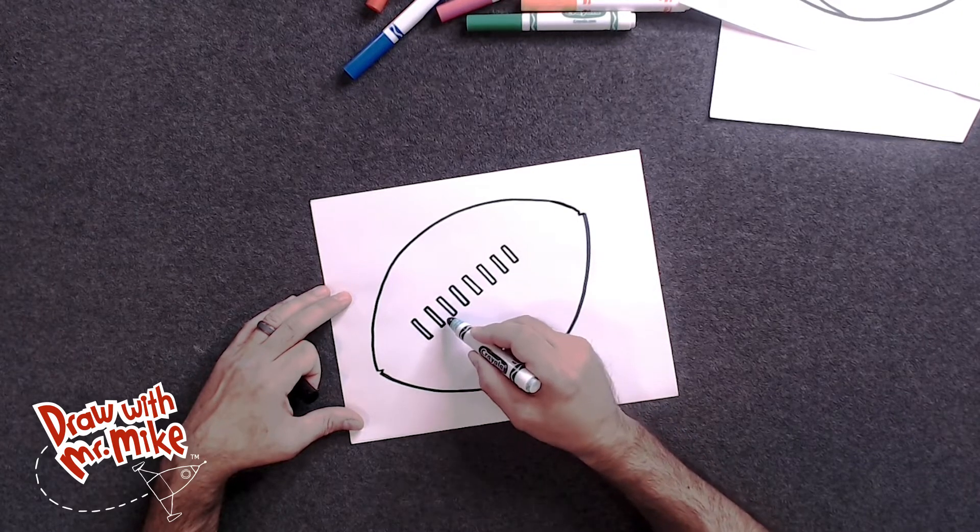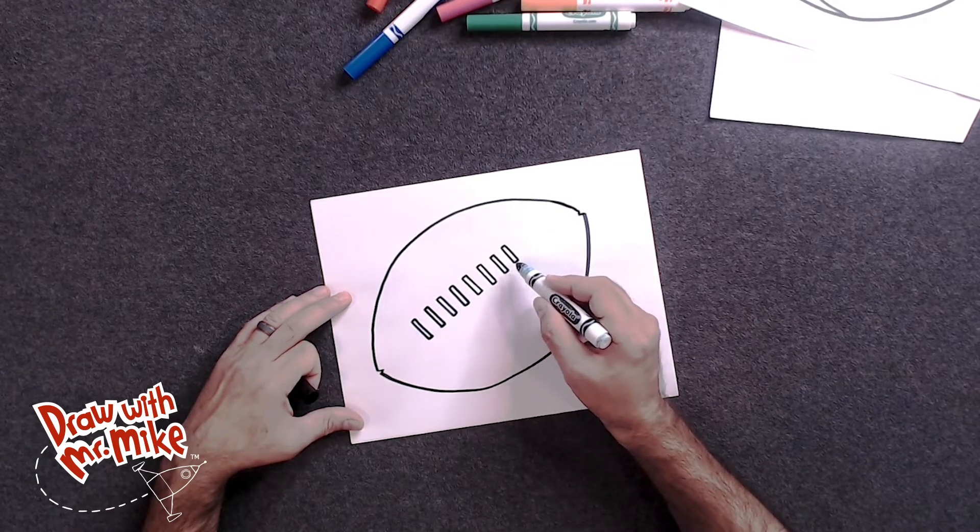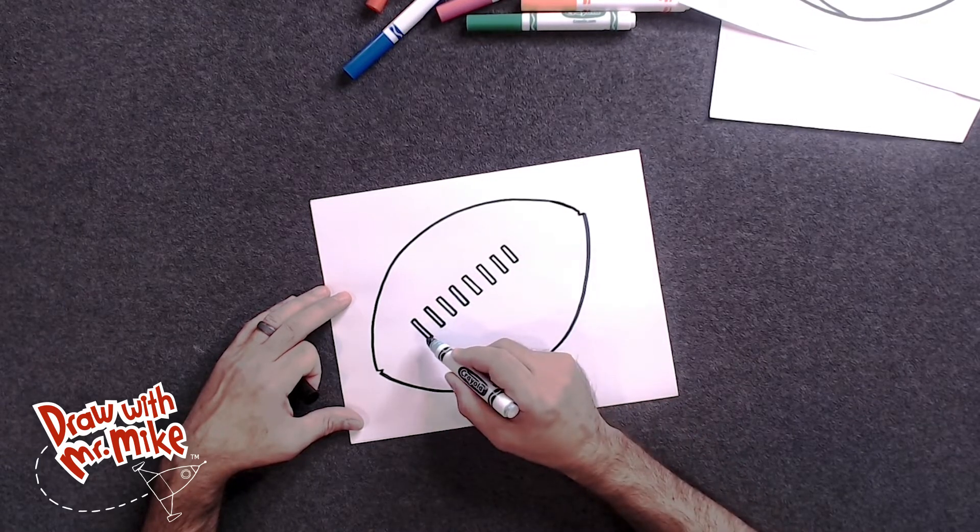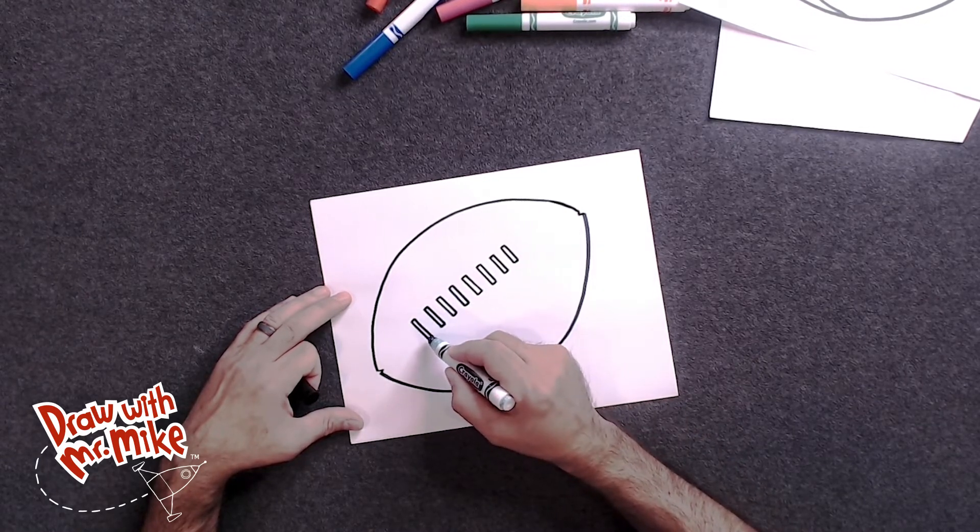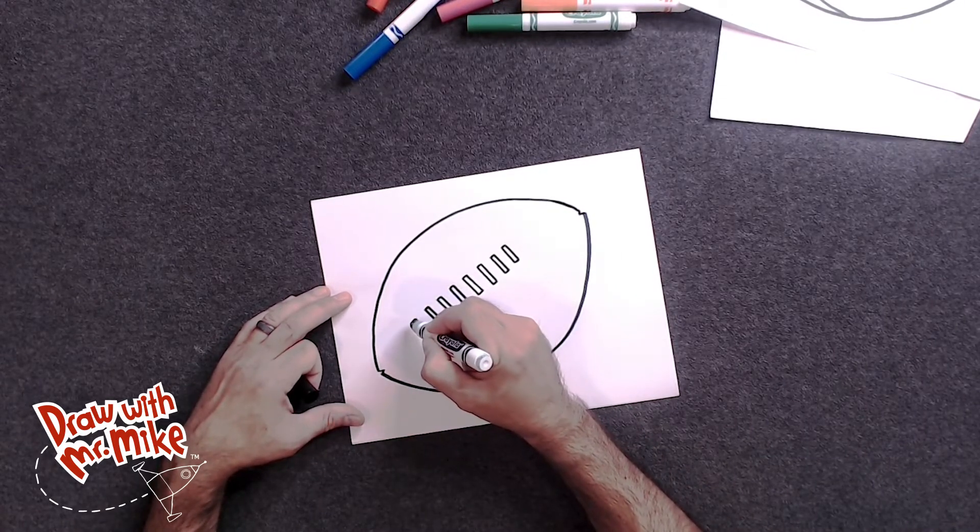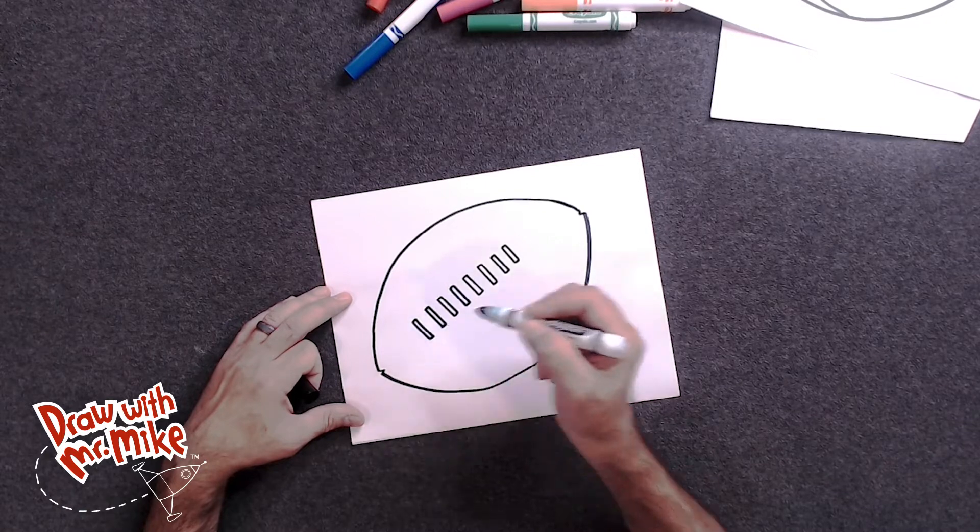And what do these laces look like? They're rectangles. They're tall, thin rectangles. But we used a line to create those. So we did one line on one side, another on the other side, and then a top and a bottom.